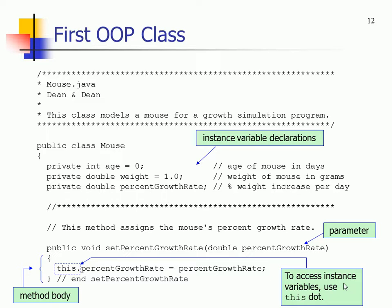Here's our first object-oriented class — the Mouse.java class. This class models a mouse for a growth simulation program. We have instance variables at the top: age, weight, and percentage of growth rate. Age is an integer, weight is a double, and we're automatically giving weight a value. When working with object-oriented, for the variables you want to use private all the time — it means these variables can only be manipulated from inside the Mouse class.